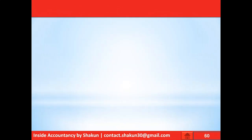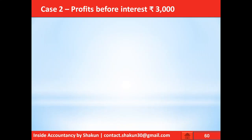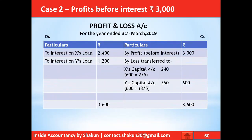In Case 2, profits before interest are 3,000. Again, we are not concerned about the profit amount — interest on loan being a charge is still shown on the debit side. This results in a divisible loss of 600, which is divided between X and Y in the ratio of 2:3. Although the profits were lesser, we still allowed interest on loan.